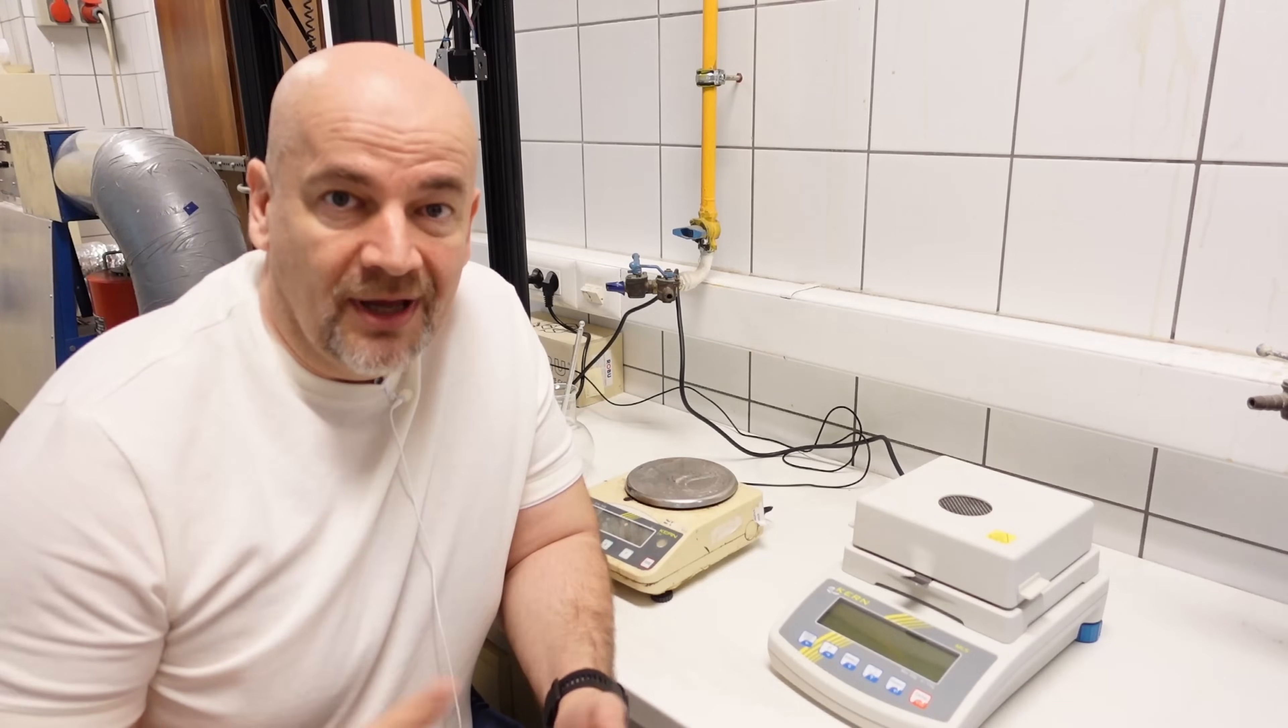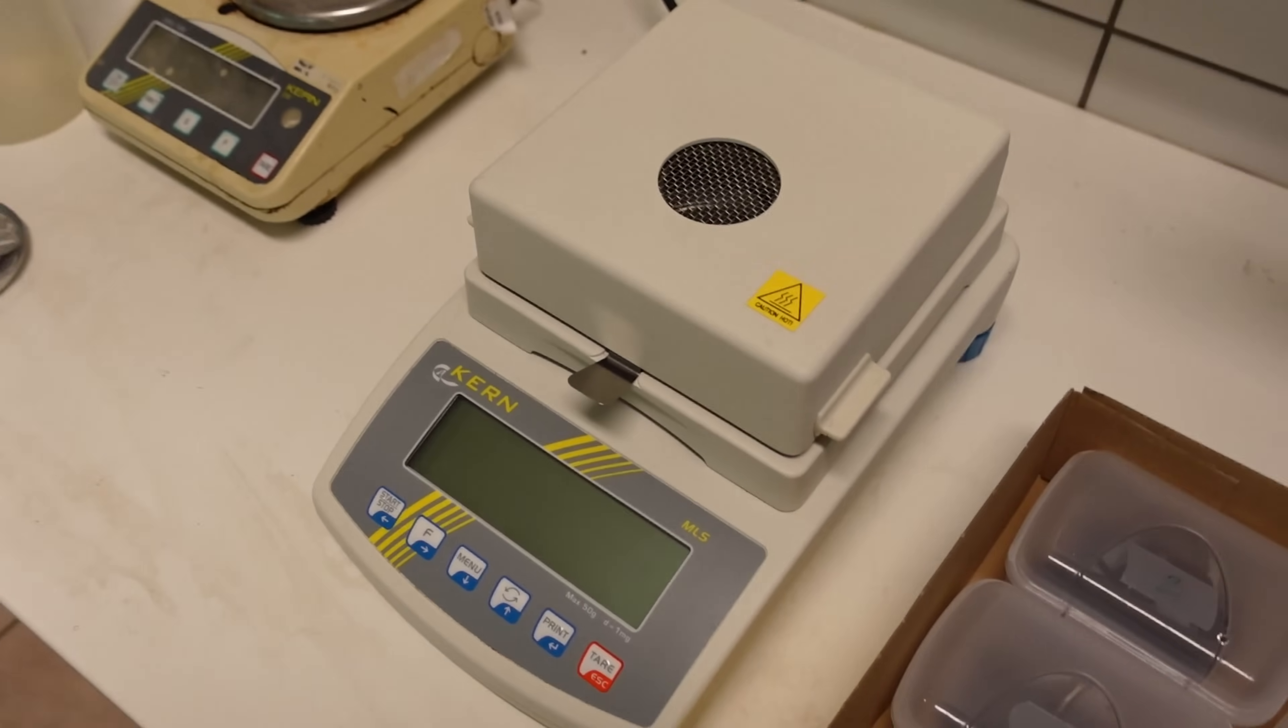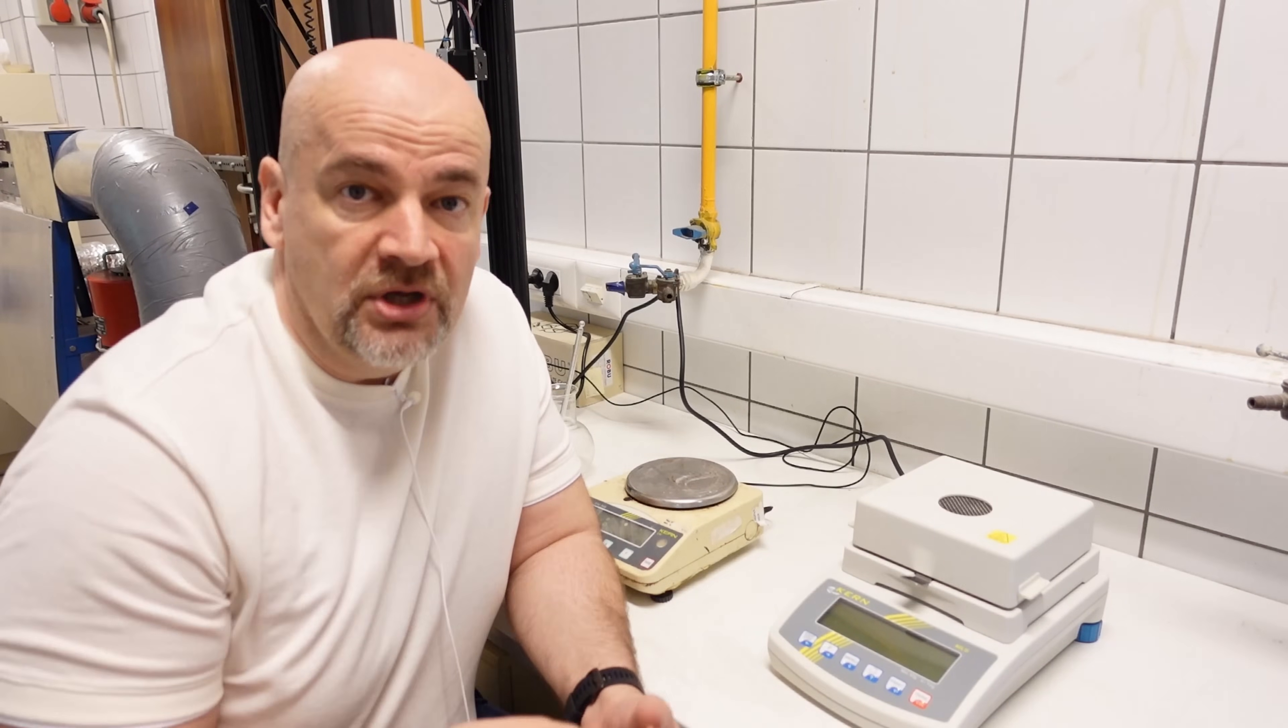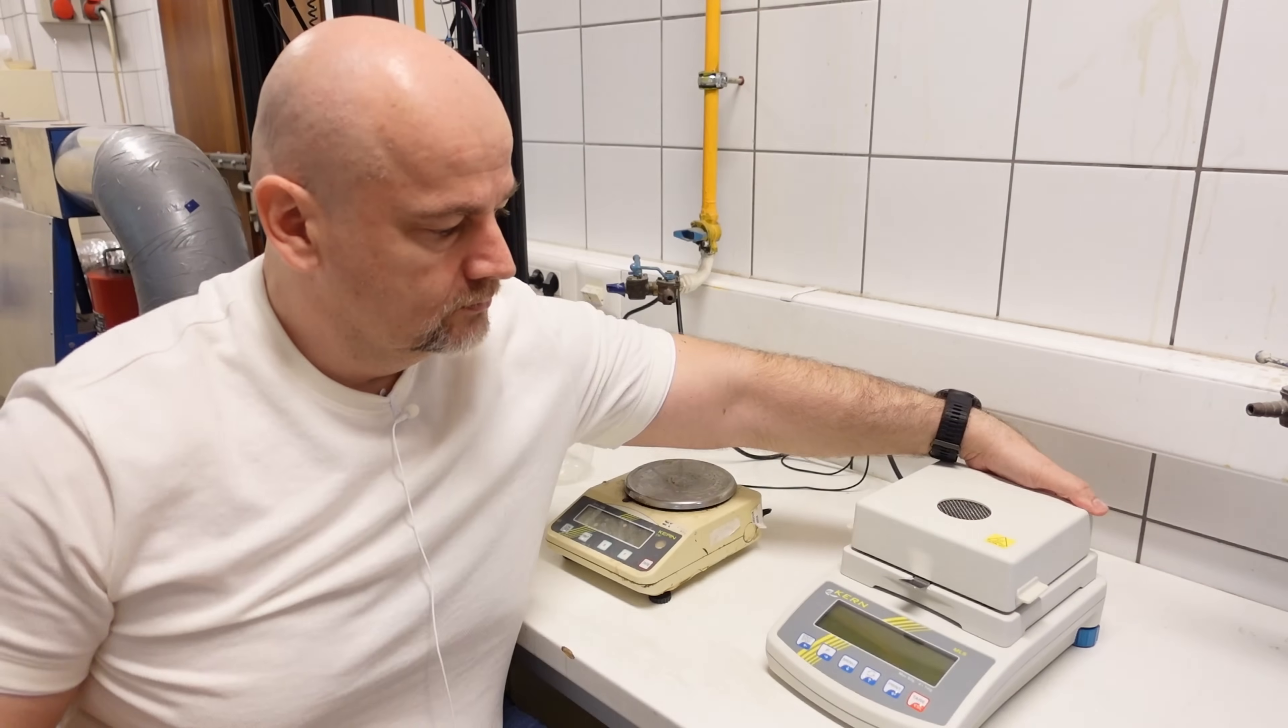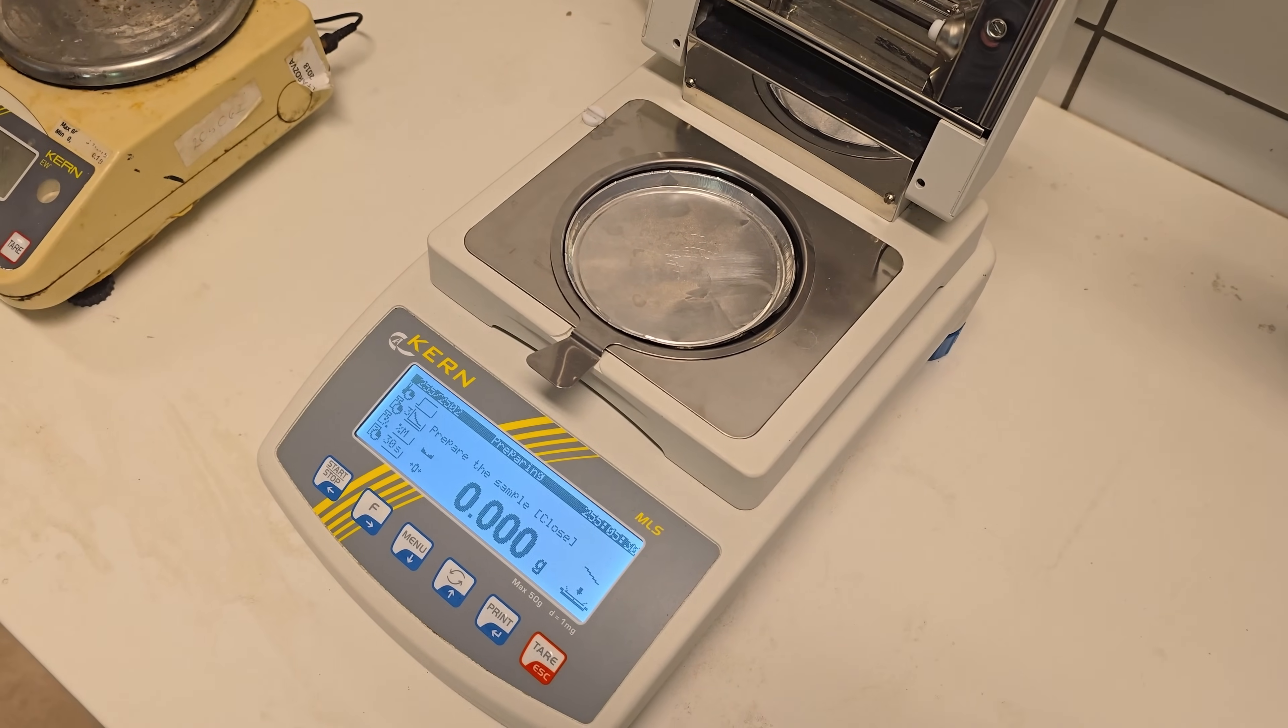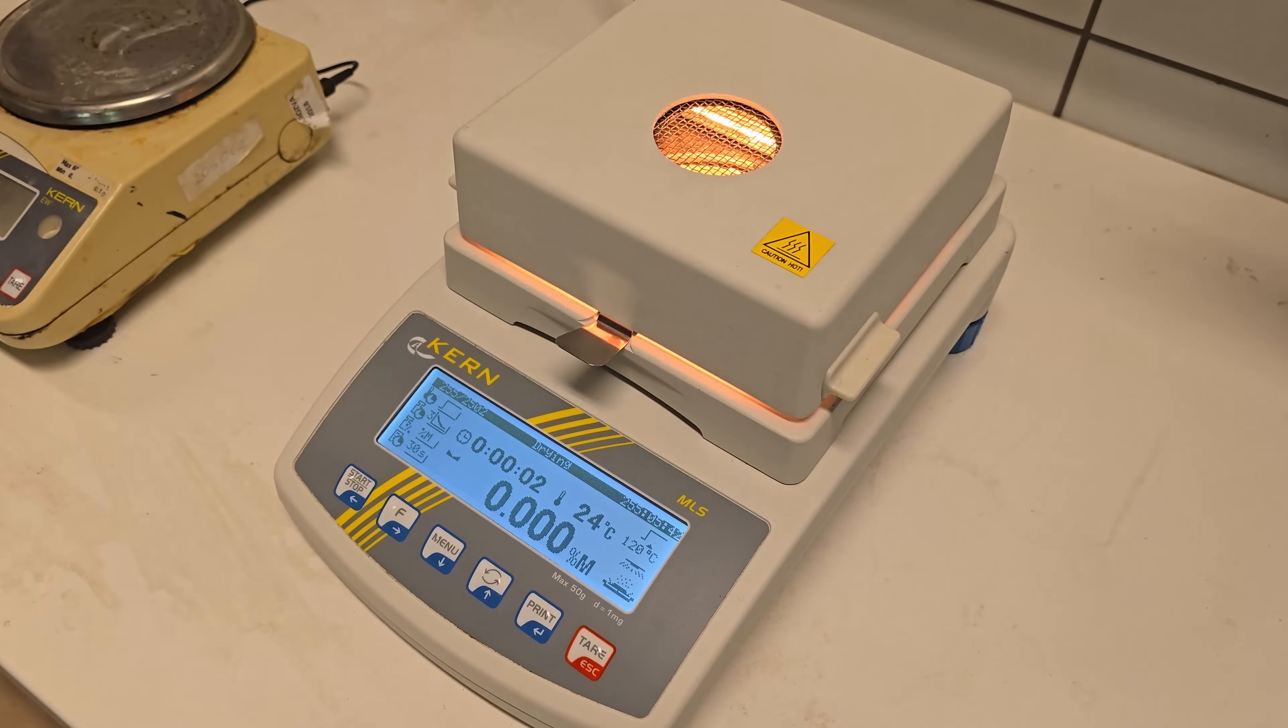The most important apparatus in this testing will be the Kern MLS. This is the electronic moisture analyzer. And usually we are using it for measuring the moisture inside the food because I work on a food engineering department. But I got the idea that actually I can use this to measure the moisture inside the filament. Let me explain you how it works. This is actually a very precise scale. So sensitive that even if I'm talking or blowing on it, it may record some changes.